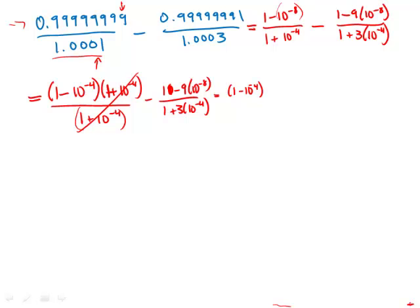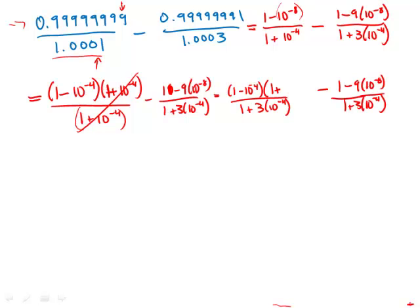Minus the second fraction, which hasn't changed yet: one minus nine times ten to the negative eighth over one plus three times ten to the negative fourth. Now I have to combine these two fractions, so I need a common denominator. This one is going to get multiplied by the denominator of the other, which is one plus three times ten to the negative fourth, and that factor goes in both the numerator and denominator. Now I have a common denominator and can put everything together.